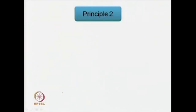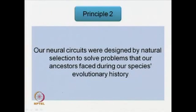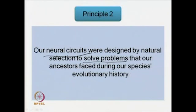We now come to the second principle as given to us by Tooby and Cosmides. Principle 2 goes like this, in their words: our neural circuits were designed by natural selection to solve problems — problems that our ancestors faced during our species' evolutionary history.